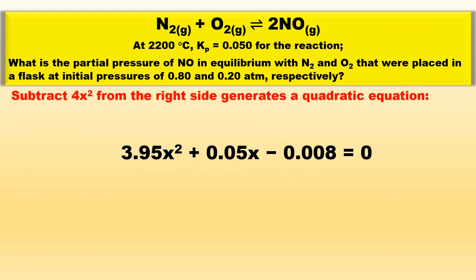Now subtracting 4x squared from the right side generates a quadratic equation which yields 3.95x squared plus 0.05x minus 0.008 is equal to 0.